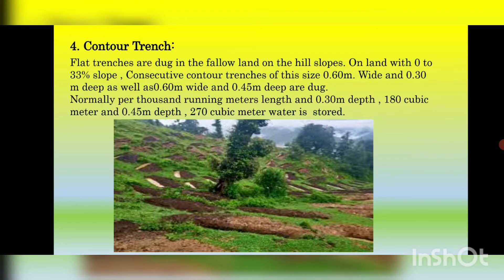Next, counter trenches. Flat trenches are dug in the fallow land on hill slopes. On land with 0 to 33 percent slope, consecutive counter trenches of size 0.60 m wide and 0.30 m deep, as well as 0.60 m wide and 0.45 m deep, are dug. Depending on the slope, the length of the trench is 833 m to 2,174 m. Normally, per 1,000 running meters, 0.30 m depth stores 180 cubic meters and 0.45 m depth stores 270 cubic meters of water. Counter trenches slow down the rapid flow of rainwater on mountaintops and also reduce soil erosion.